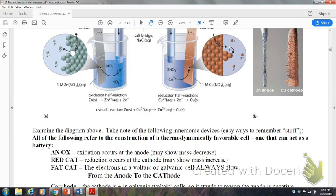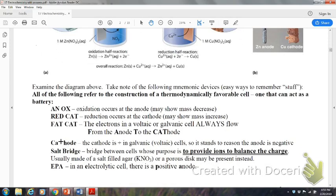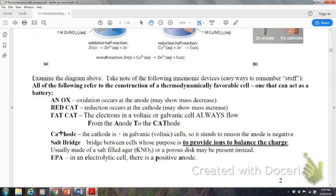So, if you take note of the mnemonic devices, ANOX, oxidation occurs at the anode. REDCAT, FATCAT. Cathode, you can always remember because it's got the little plus sign for the T. The cathode is going to be in a galvanic cell. It's going to be positive. So, it stands to reason that the anode is negative. This is going to be important. The salt bridge is there to provide ions to balance the charge. And then the difference for an electrolytic cell is in that electrolytic cell, the anode is positive. So, that helps you remember that with EPA, electrolytic, positive, anode. That's going to be the main difference there.